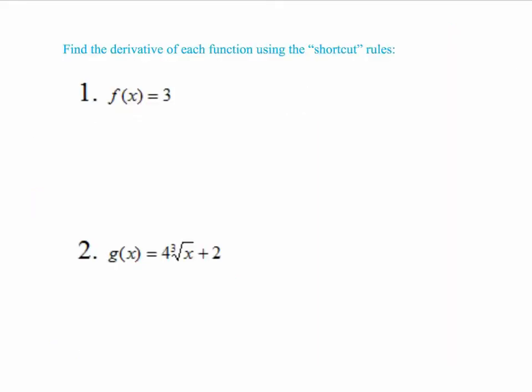Okay, so the first one, f of x is equal to 3, that is a constant, and we're going to use our constant rule. The derivative of a constant is 0, so the way that we would write that is that f prime of x is equal to 0, and we're done.